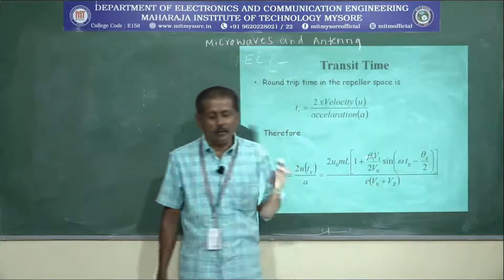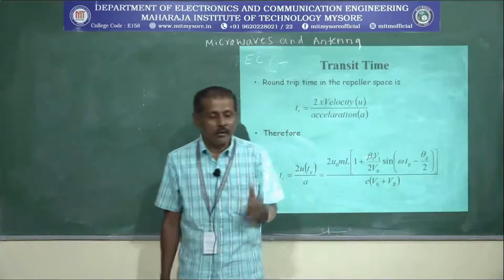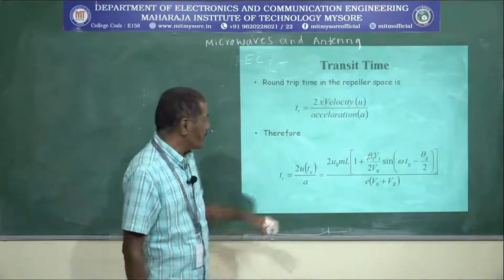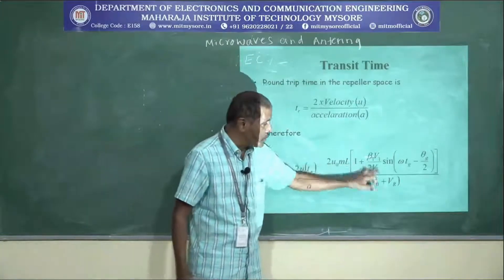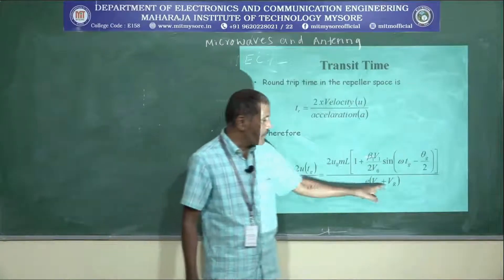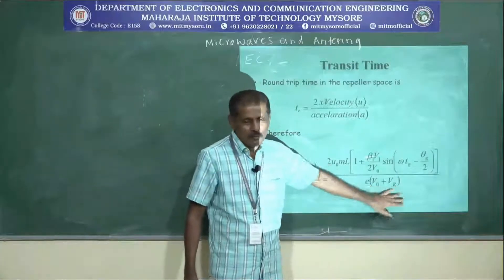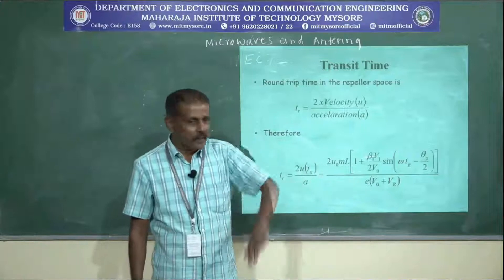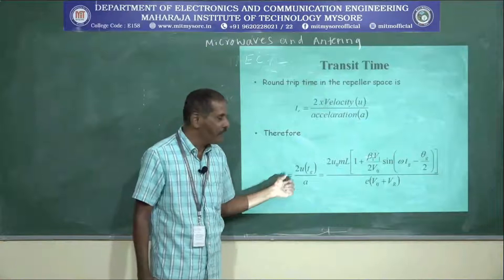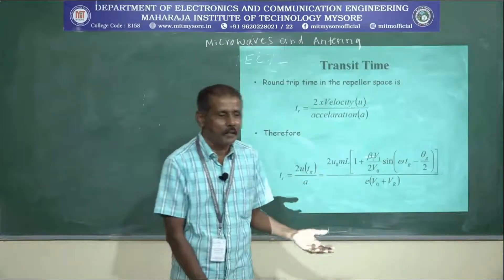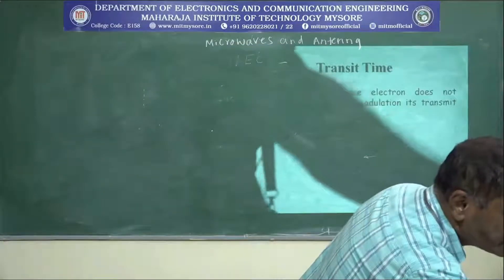In this equation, V0 is the voltage applied to the cavity grid and VR is the voltage applied to the repeller space. If you closely observe this equation, the transit time tR depends on V0 and VR. Increasing or decreasing either V0 or VR, or both, will affect the transit time tR.